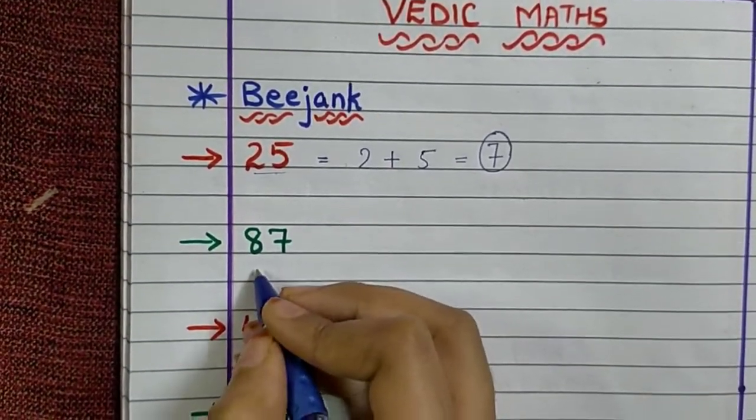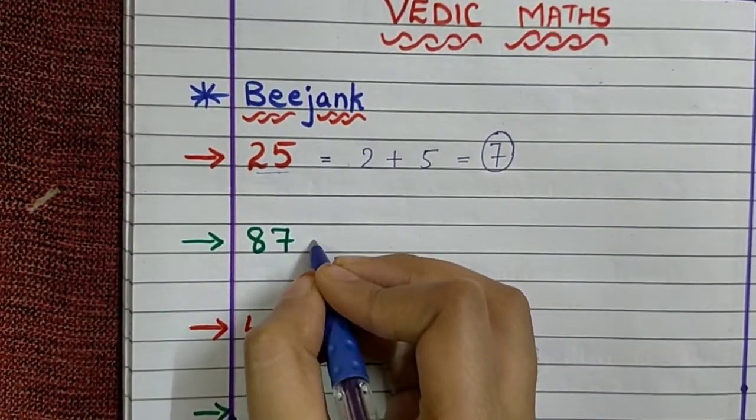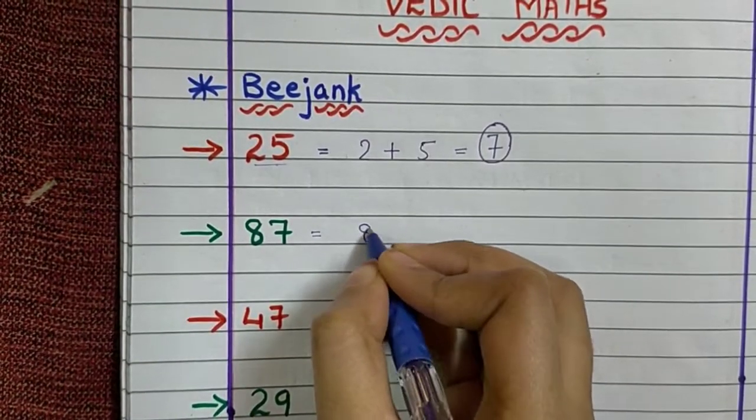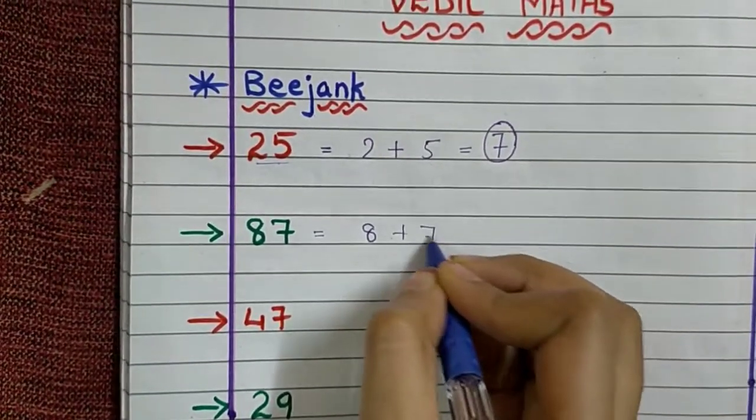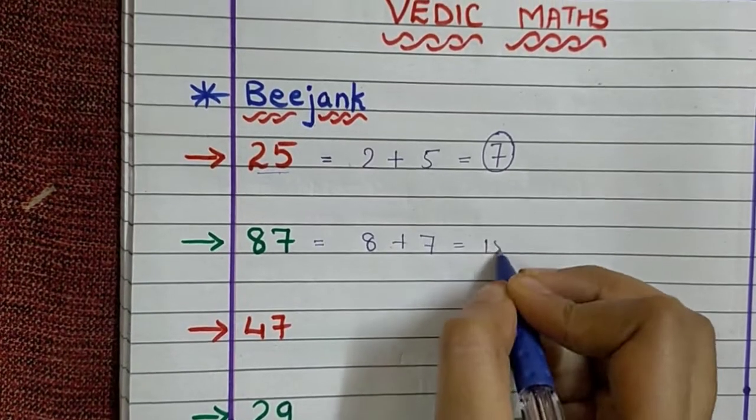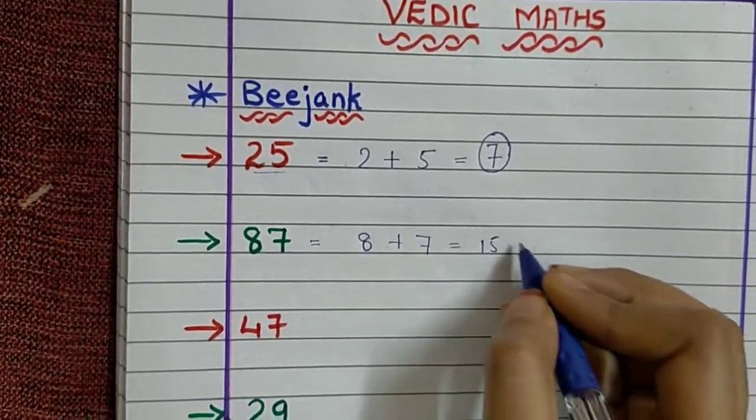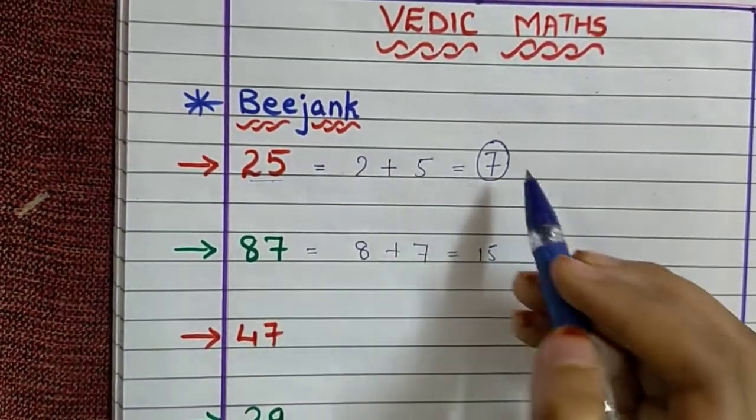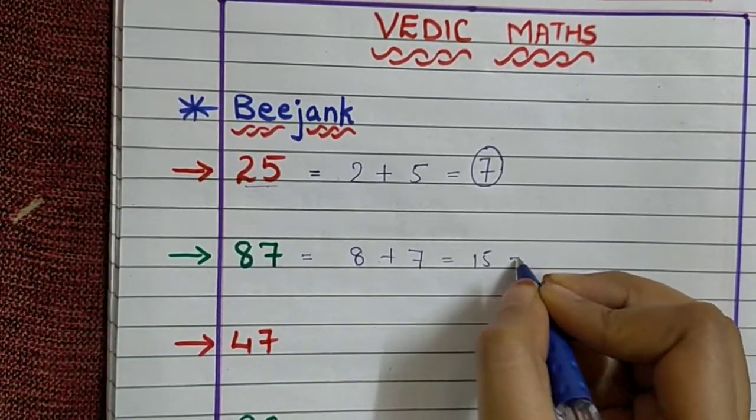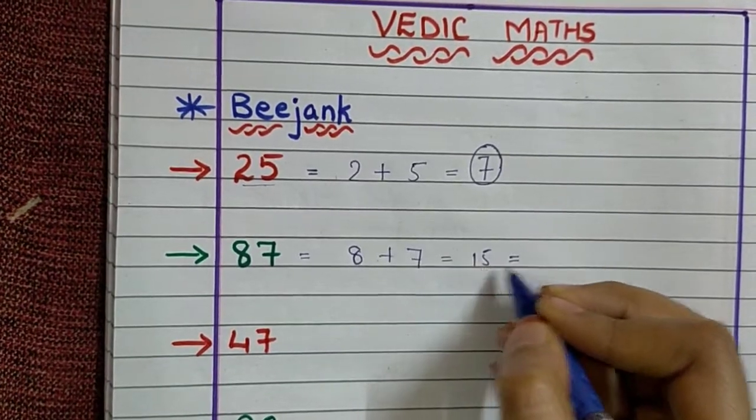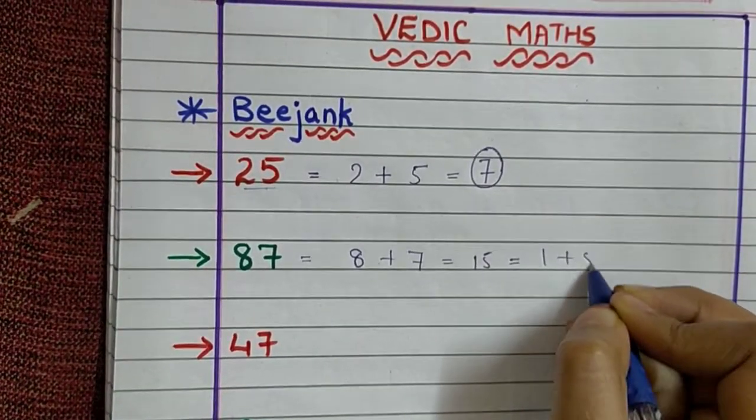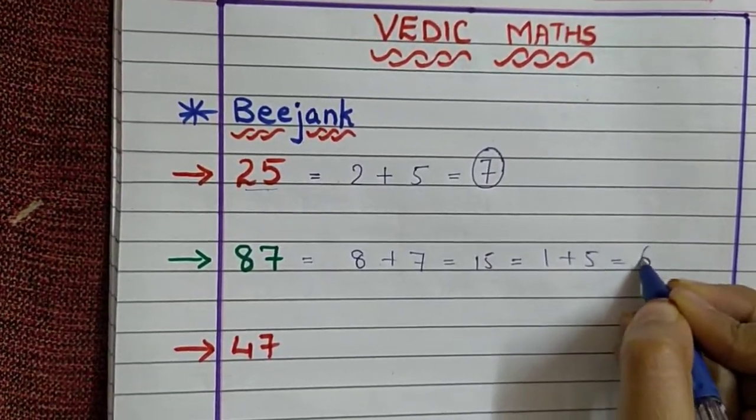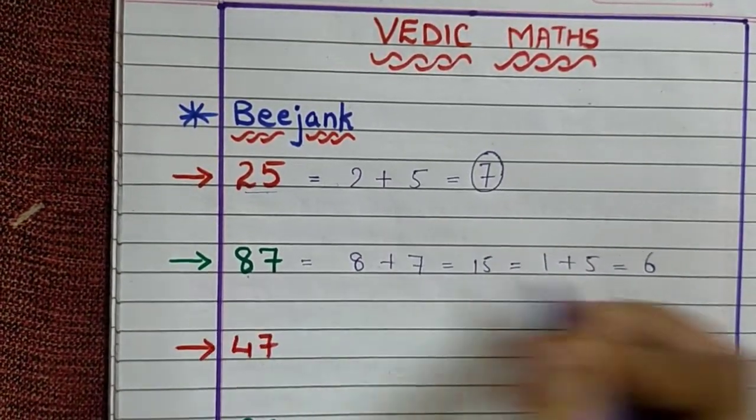Second number is 87. Beejank of 87 will be like this: 8 plus 7 is equal to 15. Now most of you will think that 15 is the Beejank. But Beejank should be a 1 digit number, not 2. So here we will add 15 also. 1 plus 5 will be 6. So the Beejank of 87 is 6.